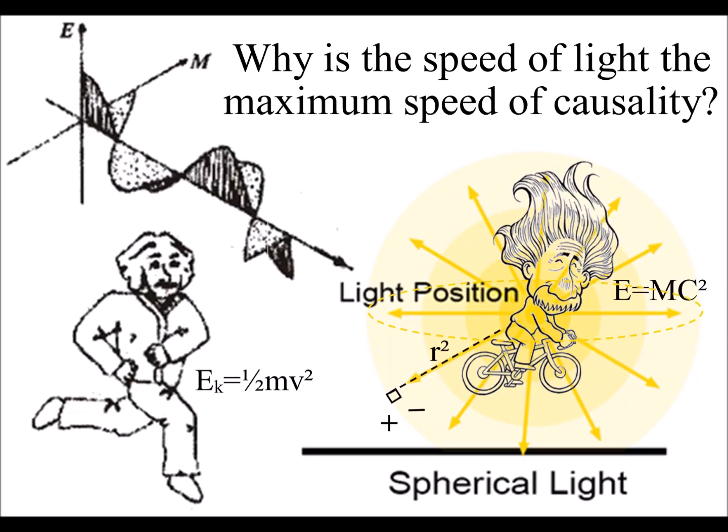In our universe we have a limiting velocity c, with the speed of light being the maximum speed of causality.